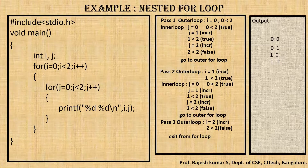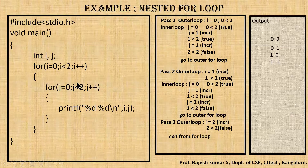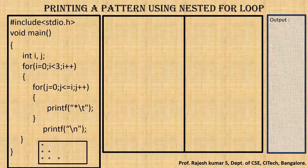Just a short revision: the condition i less than two tells how many times the outer for loop should be executed — in this case, two times. Similarly, j less than two is the iteration condition for the inner for loop, which also executes two times per outer loop pass.